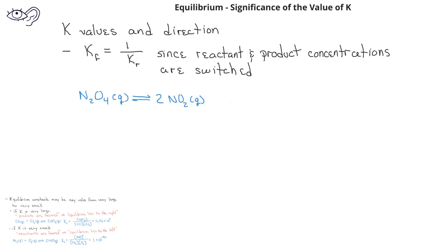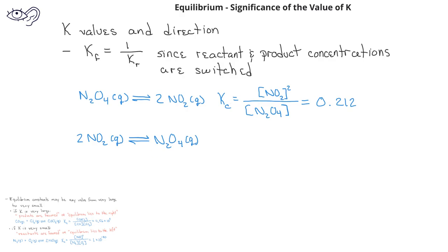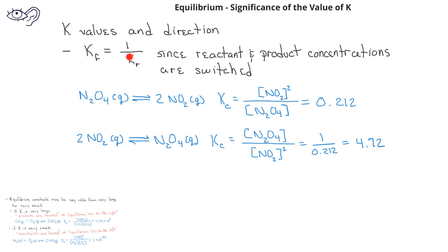For example, looking at N₂O₄ decomposing to produce two NO₂ molecules, we have an equilibrium constant expression of the square of the NO₂ concentration divided by the concentration of N₂O₄. At 100 degrees Celsius, K sub c has a value of 0.212. However, if we reverse the way we write this chemical equilibrium system so that two moles of NO₂ gas combine to form one mole of N₂O₄ gas, the equilibrium constant expression in this direction would be the concentration of N₂O₄ divided by the square of the concentration of NO₂. The value of the equilibrium constant in this direction would be 1 divided by 0.212, which is the reciprocal of the equilibrium constant in the opposite direction, and it would have a value of 4.72.